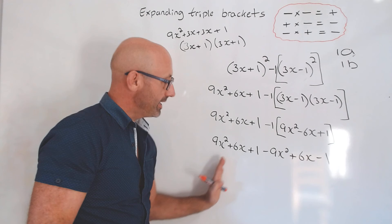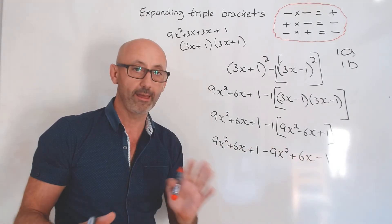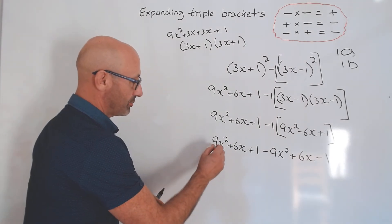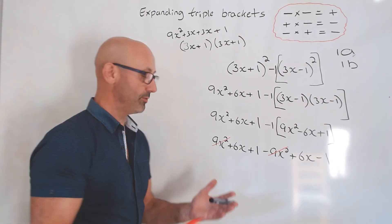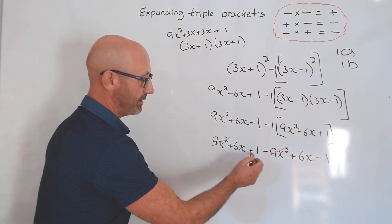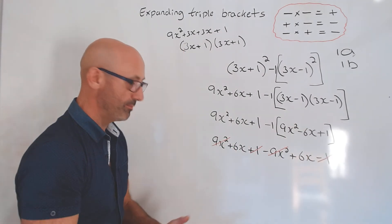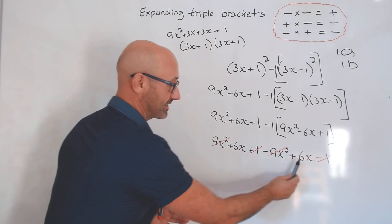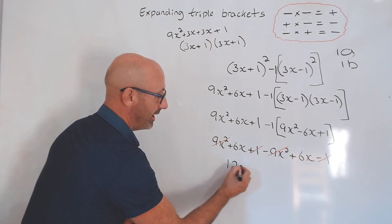At this point here we want to put these things together. We're going to put the squares together. 9x squared minus 9x squared is 0, and then here we've got plus 1 minus 1 is 0, and of course we're left with 6x and 6x which is 12x.